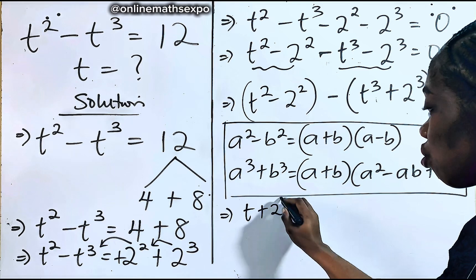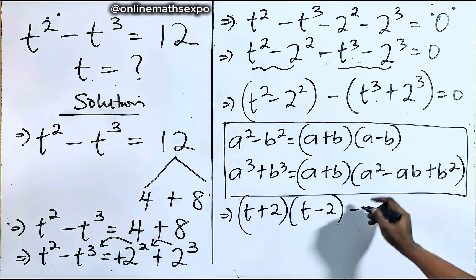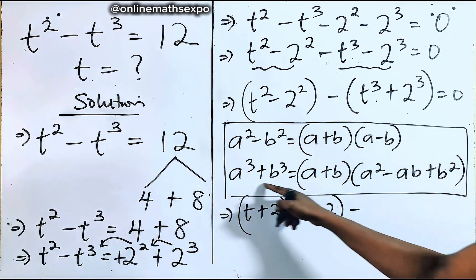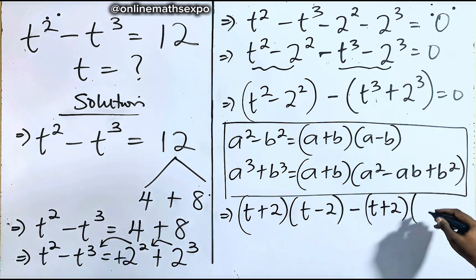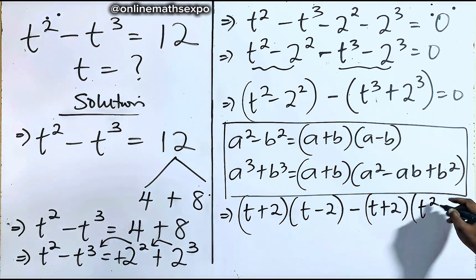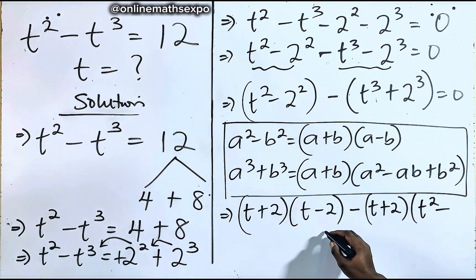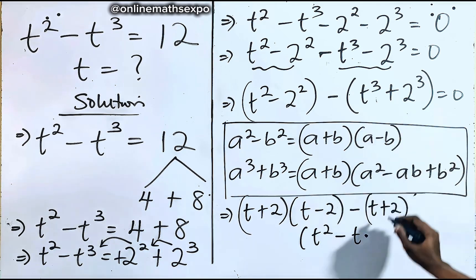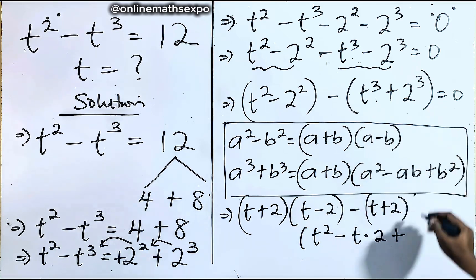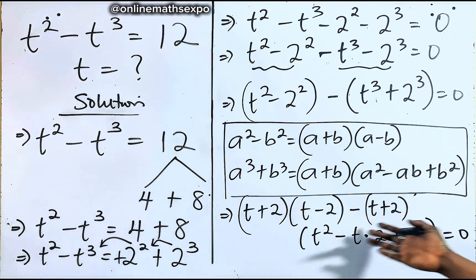Applying the difference of squares identity to t squared minus 2 squared gives us (t + 2)(t − 2). Then applying the sum of cubes identity to t cubed plus 2 cubed gives us (t + 2)(t squared minus t times 2 plus 2 squared), all equal to 0.